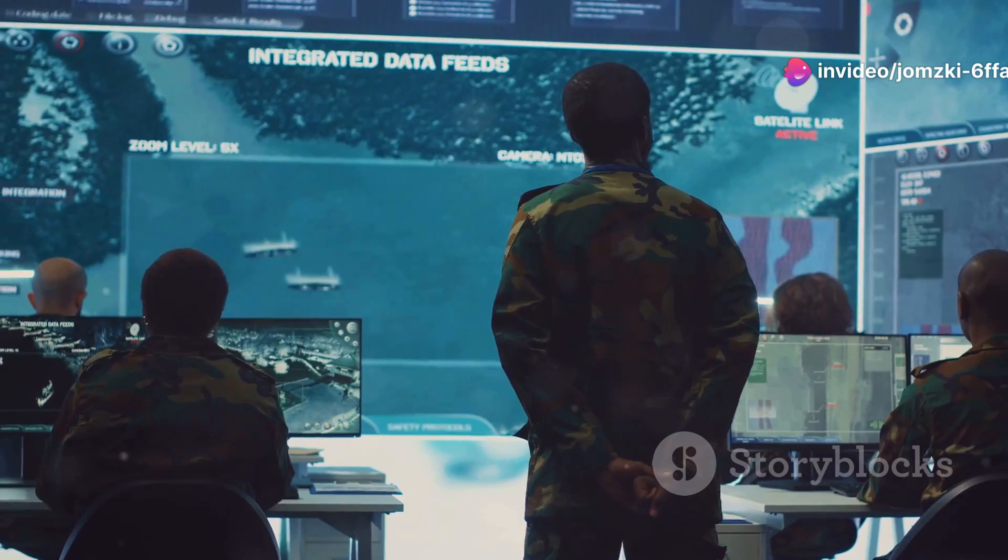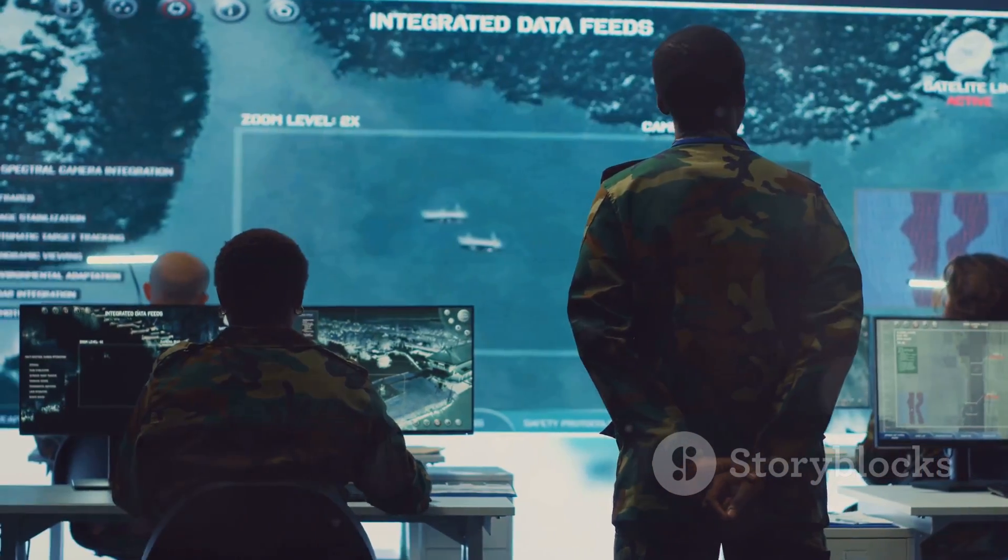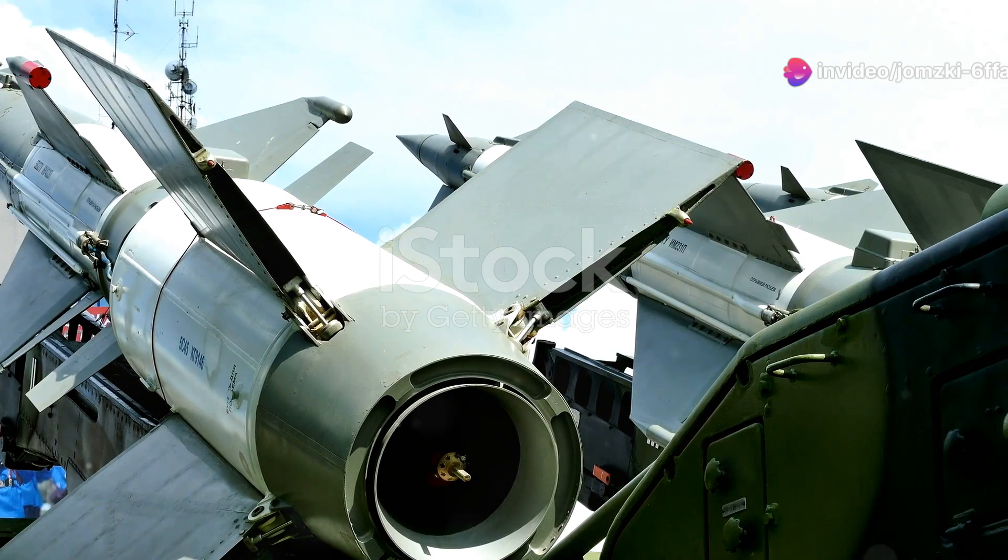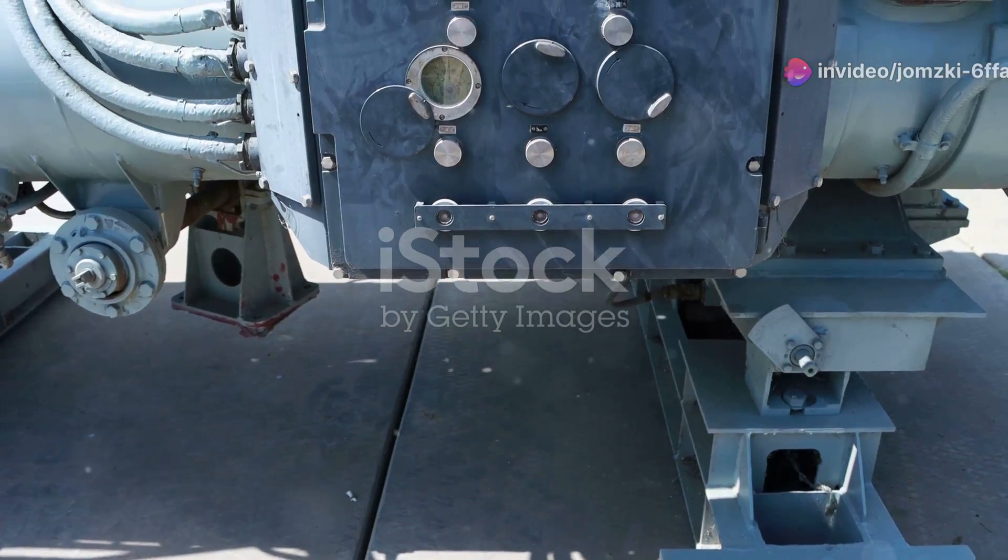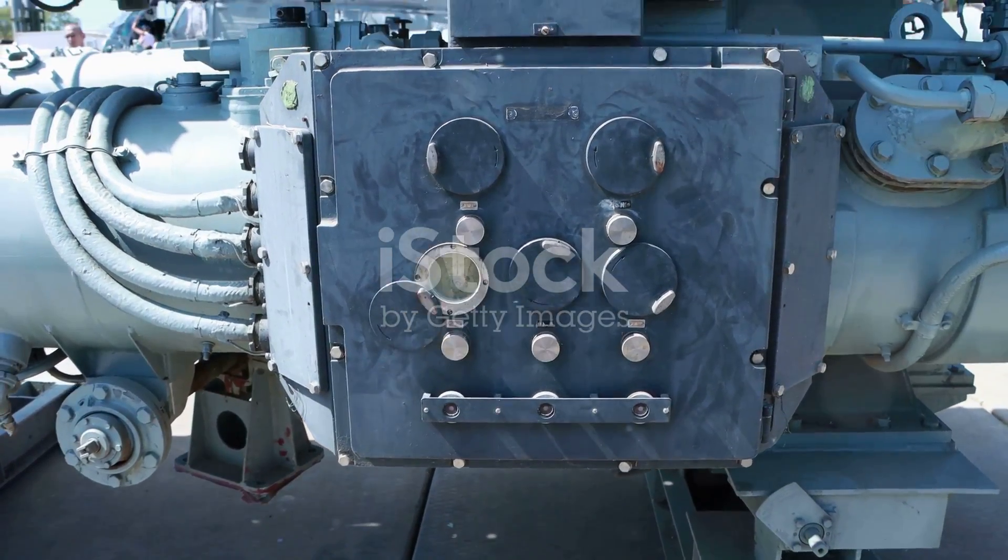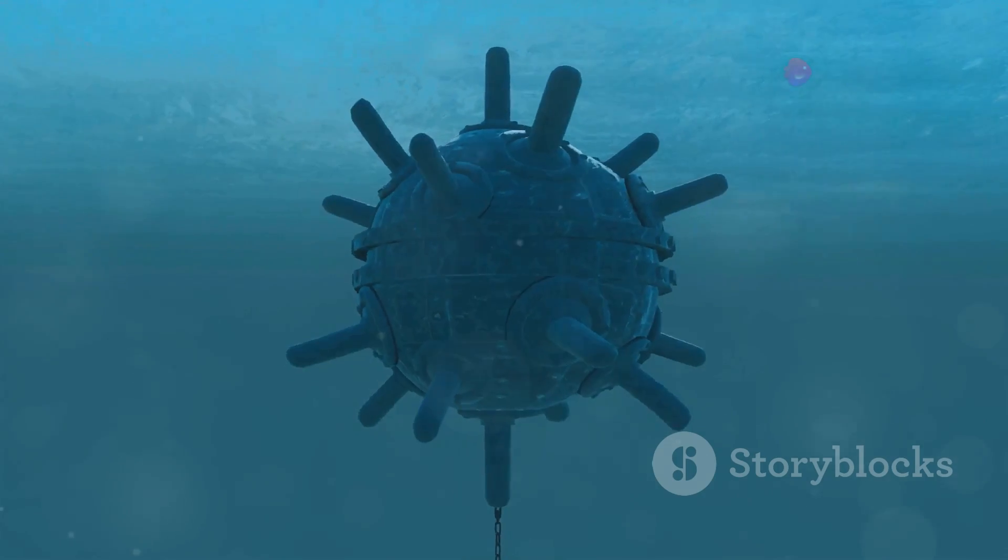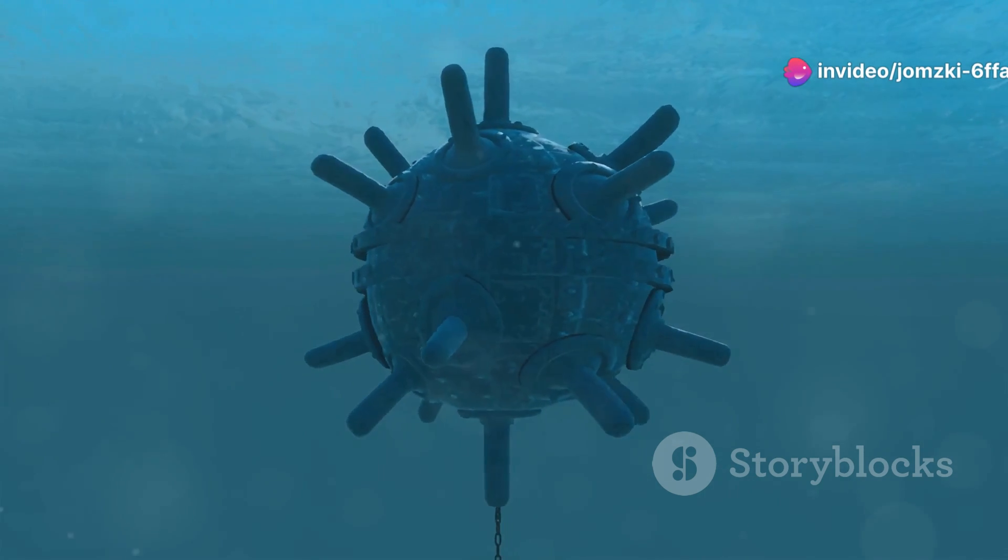Guiding the Guardian: Command and Homing Guidance Systems. Once a target has been detected and tracked by the radar system, the next crucial step is to guide the SAM towards it. This is where guidance systems come into play, acting as the brains of the operation, steering the missile with pinpoint accuracy. There are two main types of guidance systems used in SAMS: Command Guidance and Homing Guidance.